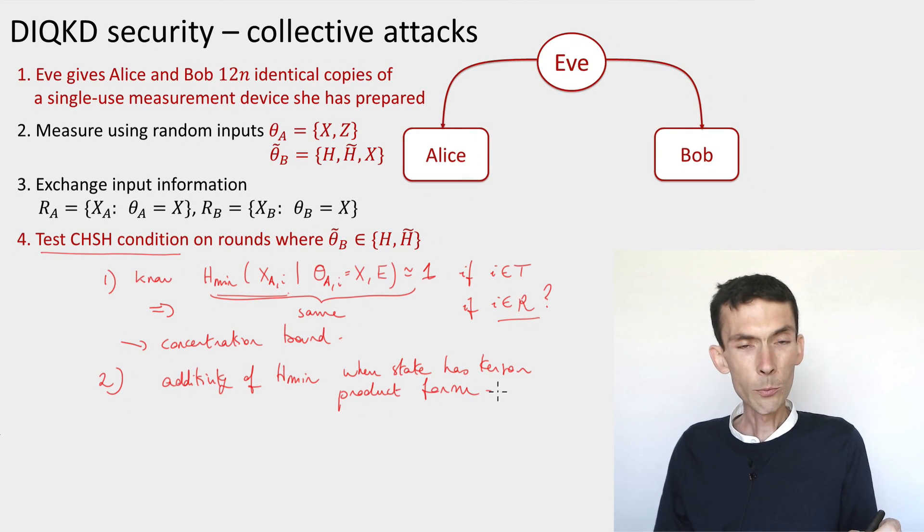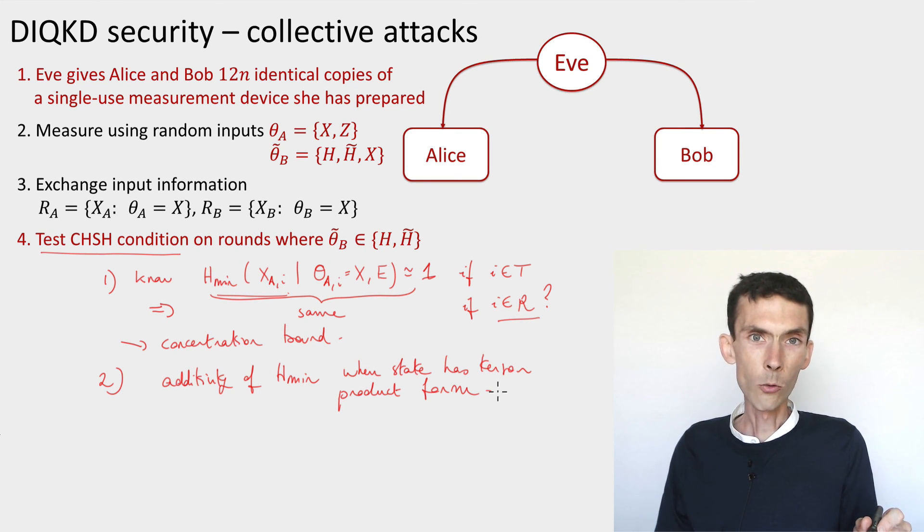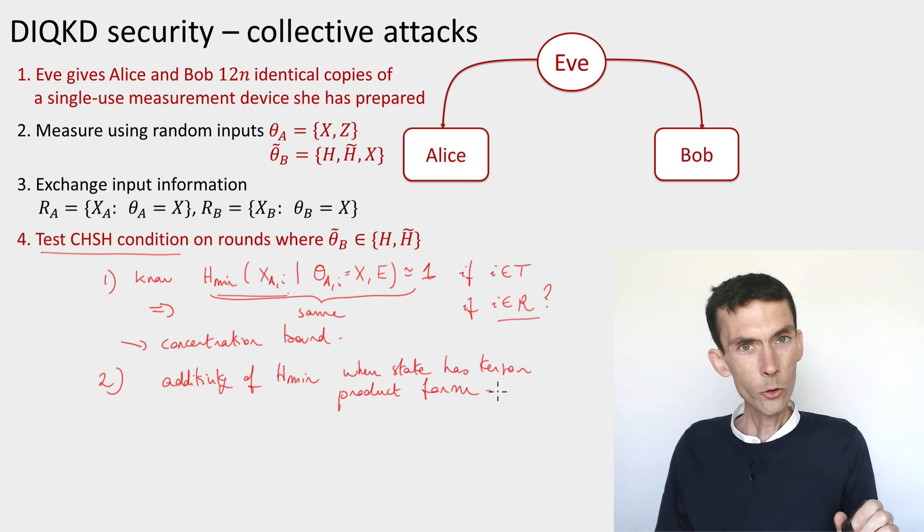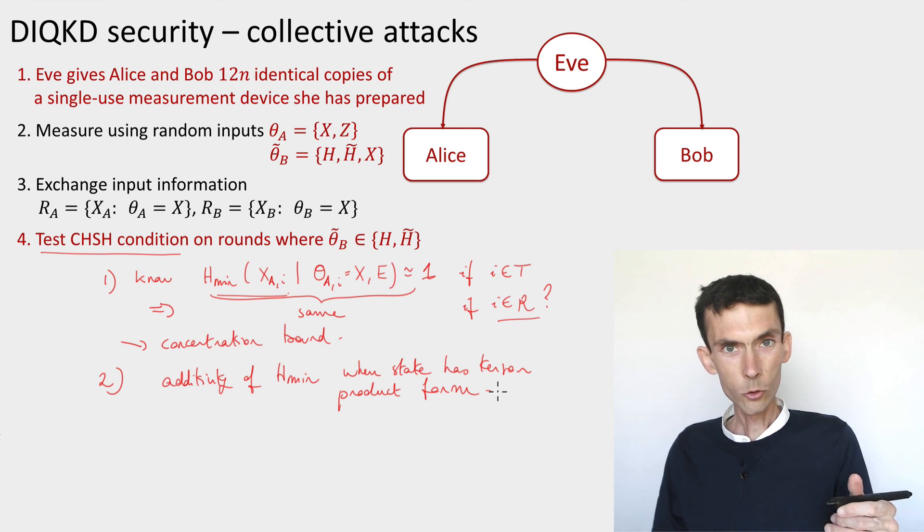If we make this assumption of collective attacks, we can perform these two steps and our analysis is complete. Now if the eavesdropper can perform general attacks, sometimes they're also called coherent attacks, then the two steps are no longer so simple. The first step, we've already seen how to get around when we were analyzing quantum key distribution in the non-device-independent scenario. You can use just a slightly more refined version of concentration bounds that doesn't require independence between the rounds. The only thing it requires is that the test rounds are chosen as a uniformly random subset of a certain size of all possible rounds, and this is the case, so we're able to perform the first step.